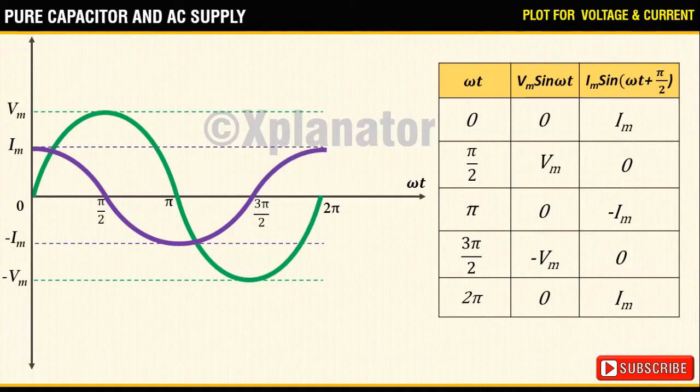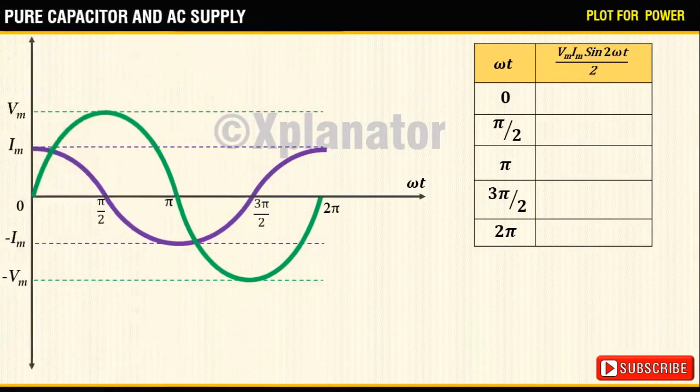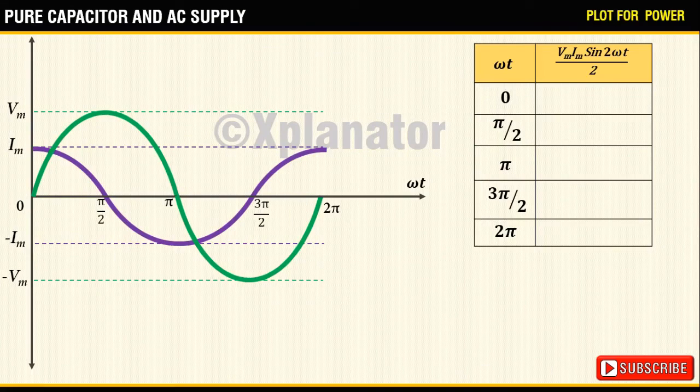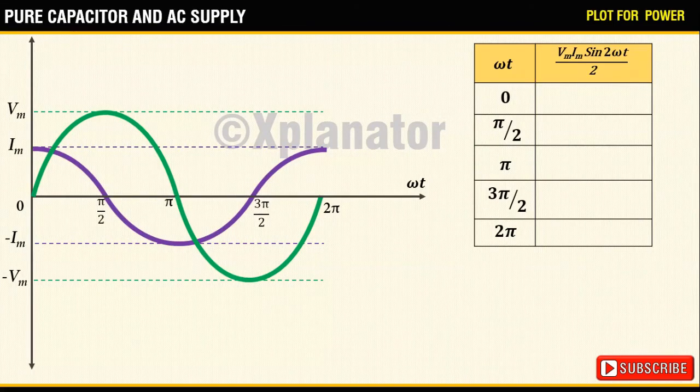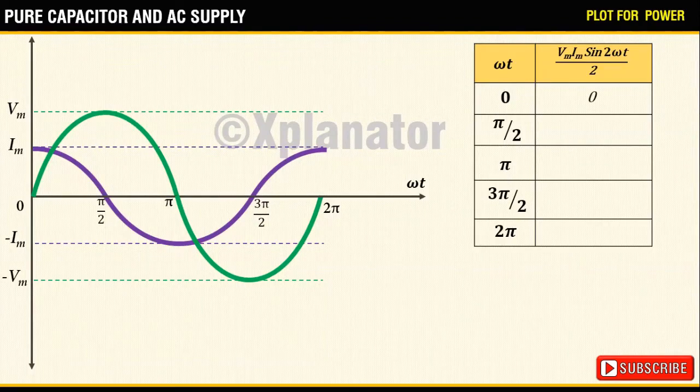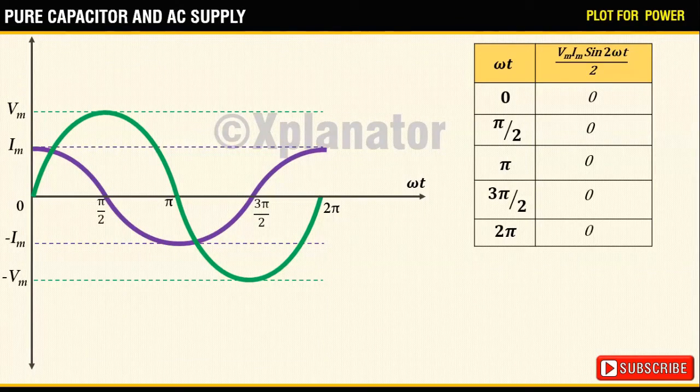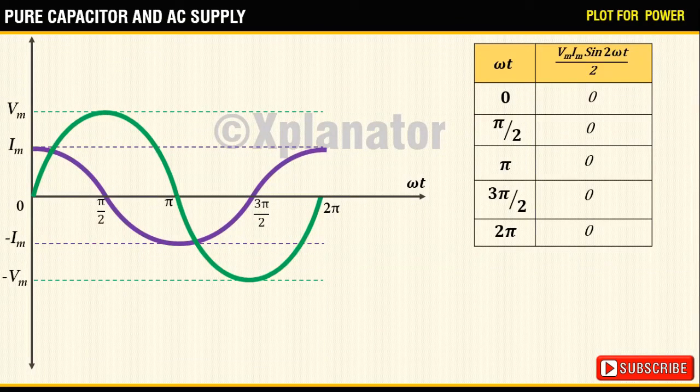Next to plot the power plot on the same plane, calculate the different values of the power for different values of omega t. You will observe that for the values under consideration, the answer turns out to be 0.